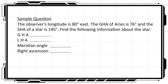Now that we've covered the basics of the time diagram, we will use a sample question to demonstrate how to construct and use it. The observer's longitude is 80 degrees east, the GHA of Aries is 76 degrees, and the SHA of a star is 145 degrees. Find the following information about the star: GHA, LHA, meridian angle, and right ascension.